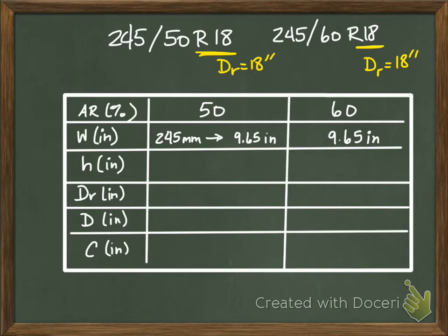Here's where we come to the difference: our height. We decided before that our height was the aspect ratio over 100 to get it back into a decimal times our width. The aspect ratios are different, so for the first one this is 0.5 because it's 50 over 100, so 50 over 100 times 9.65. This one gives me 4.83 inches.